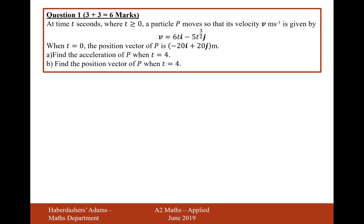At time t seconds, where t is greater than or equal to 0, a particle p moves at velocity v metres per second, given by v equals 6ti minus 5t to the power of 3 over 2j. When t equals 0, the position vector of p is minus 20i plus 20j metres. Find the acceleration of p when t equals 4.